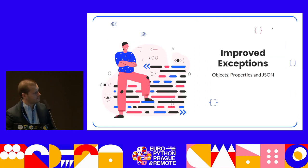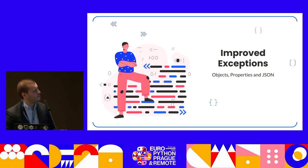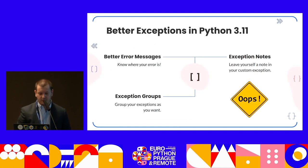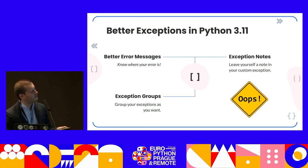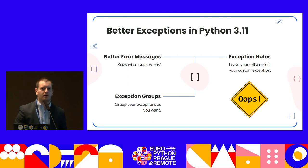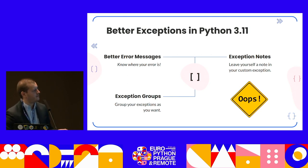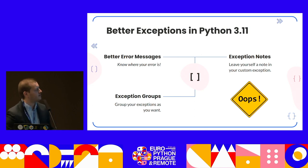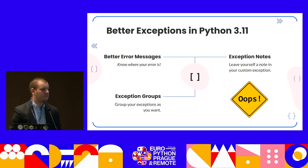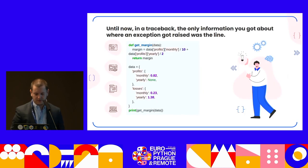Another thing in Python 3.11 — and one of the most loved features in the Python community — is improved exceptions. What these improved exceptions include are better error messages, exception notes, and exception groups. Better error messages means Python can now highlight the exact spot on your lines of code where you have errors. Exception notes let you leave a note in your custom exception. Exception groups let you define and group exceptions to be used when appropriate.